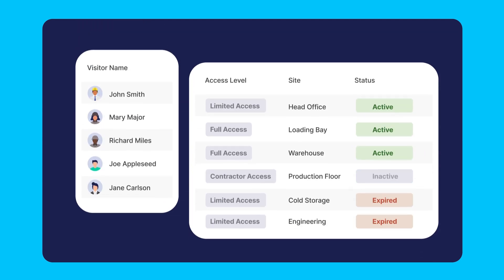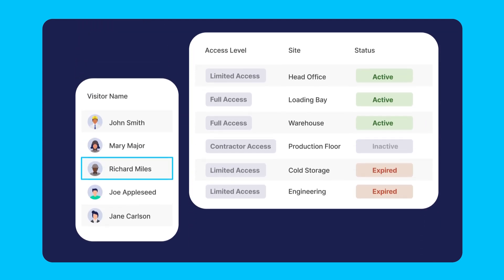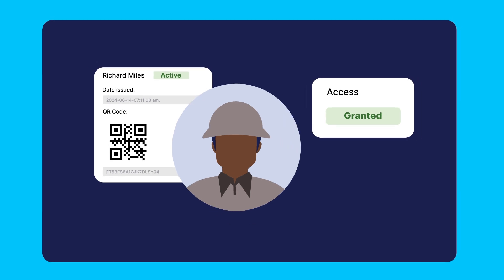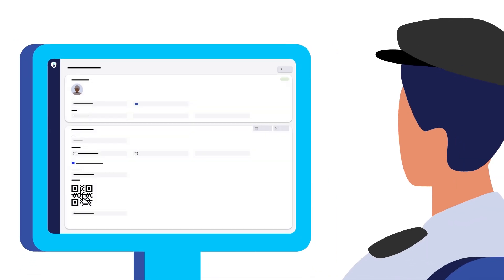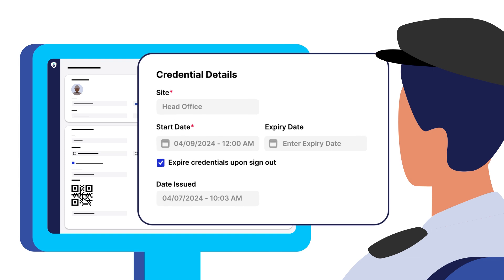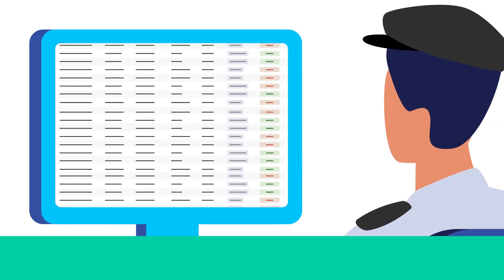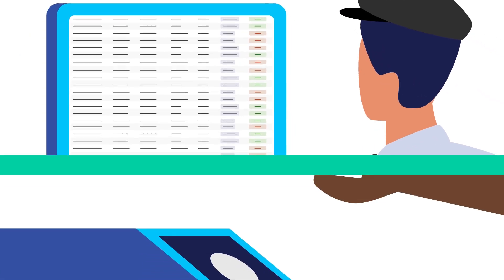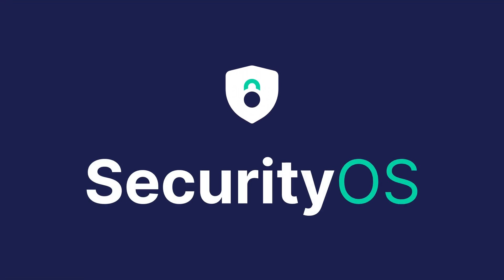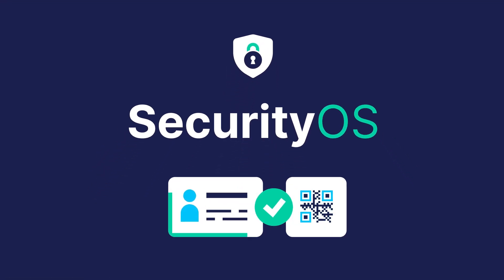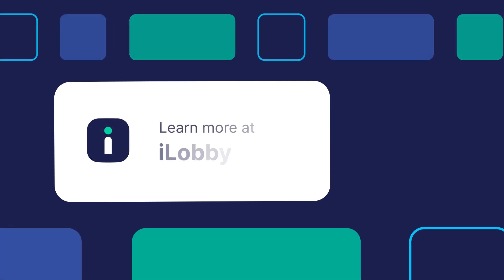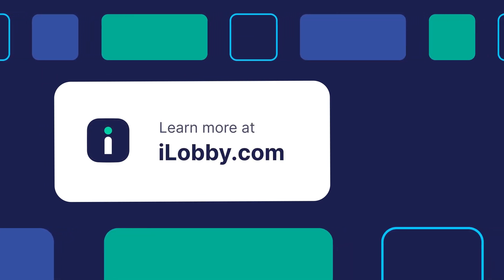You control whether or not access is granted, and all access attempts are checked against visitor permissions and are recorded to a central database, tracing a visitor's path and enhancing the integrity of access control. SecurityOS enables you to enhance security measures and easily manage physical access beyond employees at your facilities. Visit our website to learn more about how iLobby can help keep your facilities safe, secure and compliant.